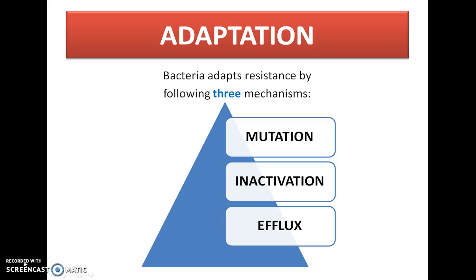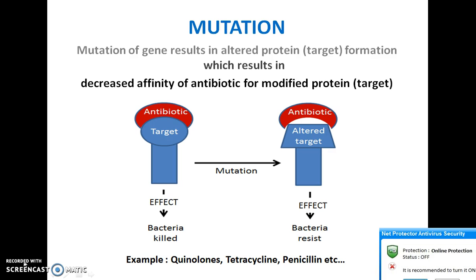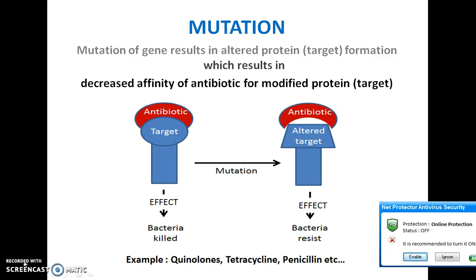Another mechanism is adaptation. Bacteria adapt resistance through three mechanisms: mutation, inactivation, and efflux. In mutation, bacteria express resistance genes, resulting in altered protein formation. This protein is the target protein where antibiotics normally attach and cause bacterial cell death. However, mutation leads to an altered target to which the antibiotic has decreased affinity, resulting in no effect — resistance against that particular antibiotic. Examples include fluoroquinolones, tetracycline, and penicillin.